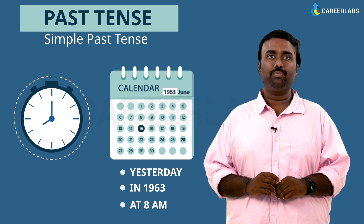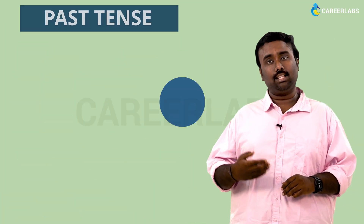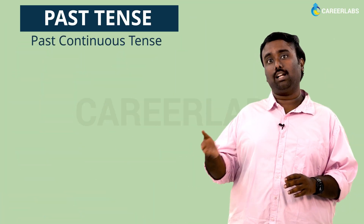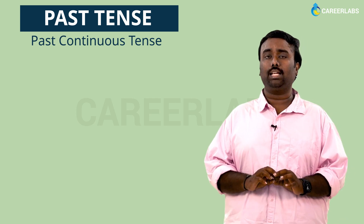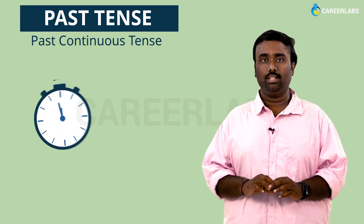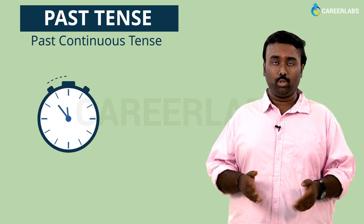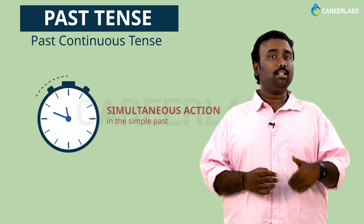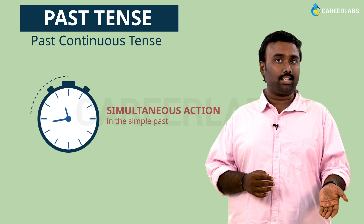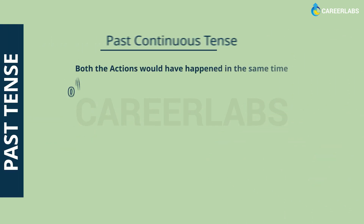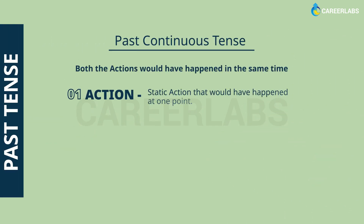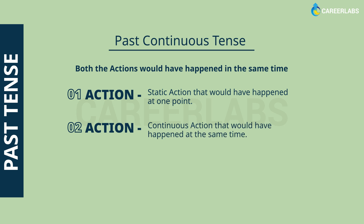Next up is the past continuous tense. Here's a simple hack to find the time clue: the time clue is another simultaneous action in the simple past tense. There will be two actions, and both of them would have happened at the same point in time.